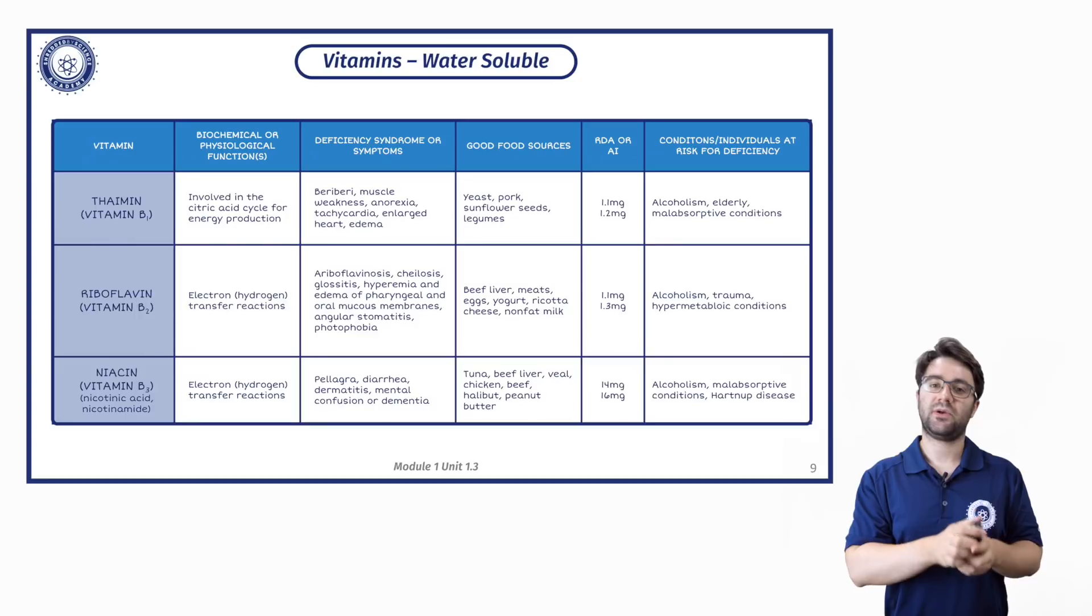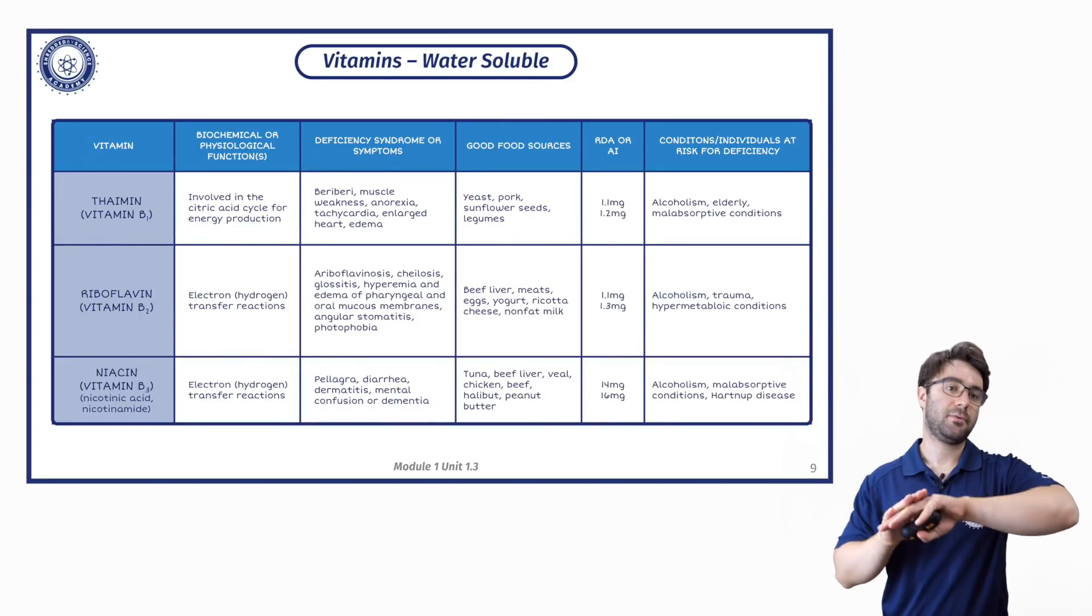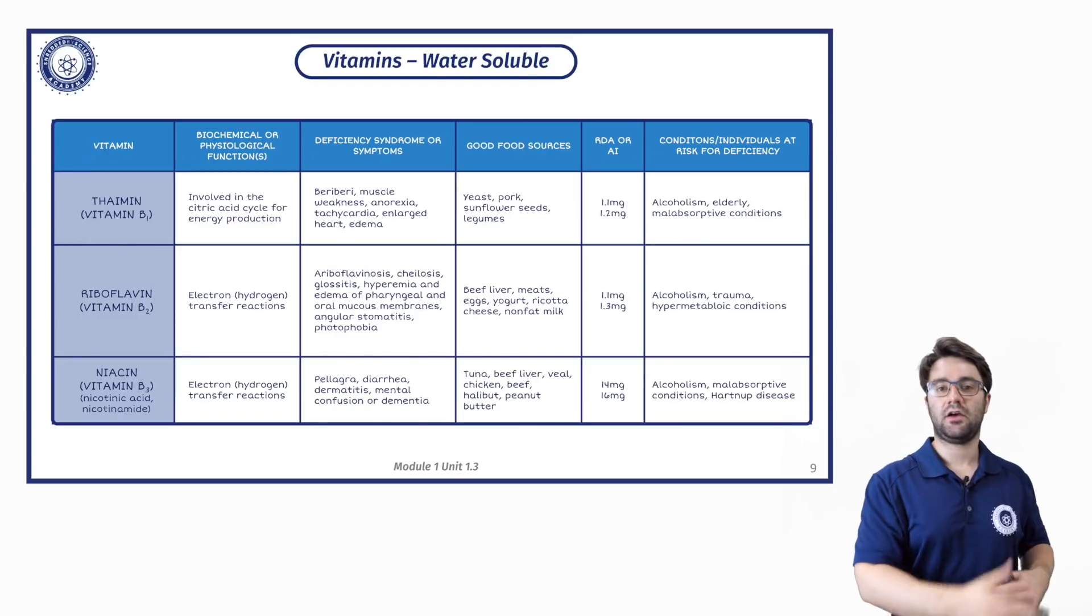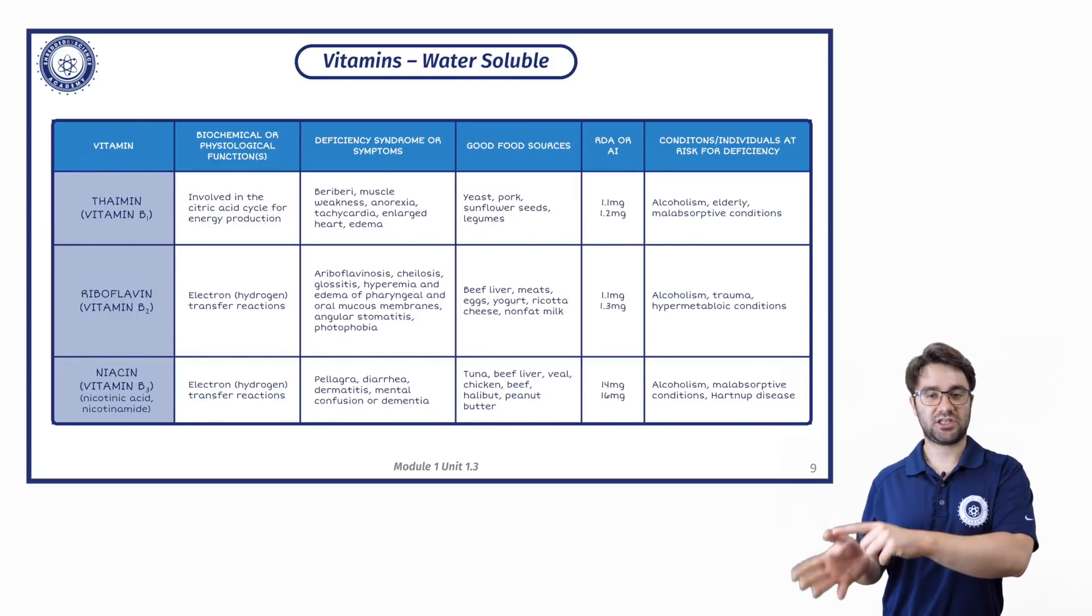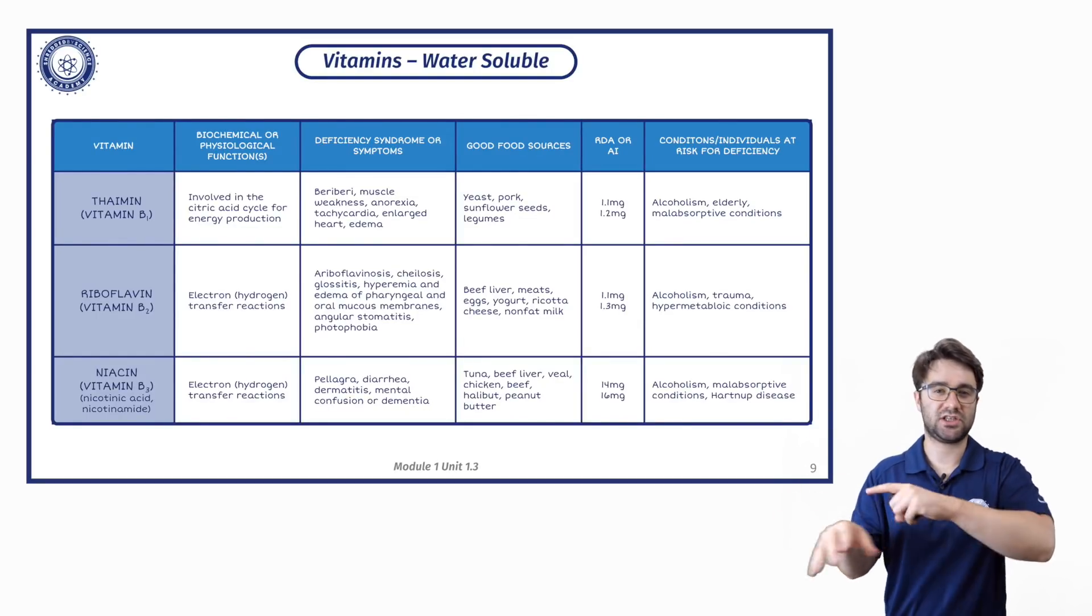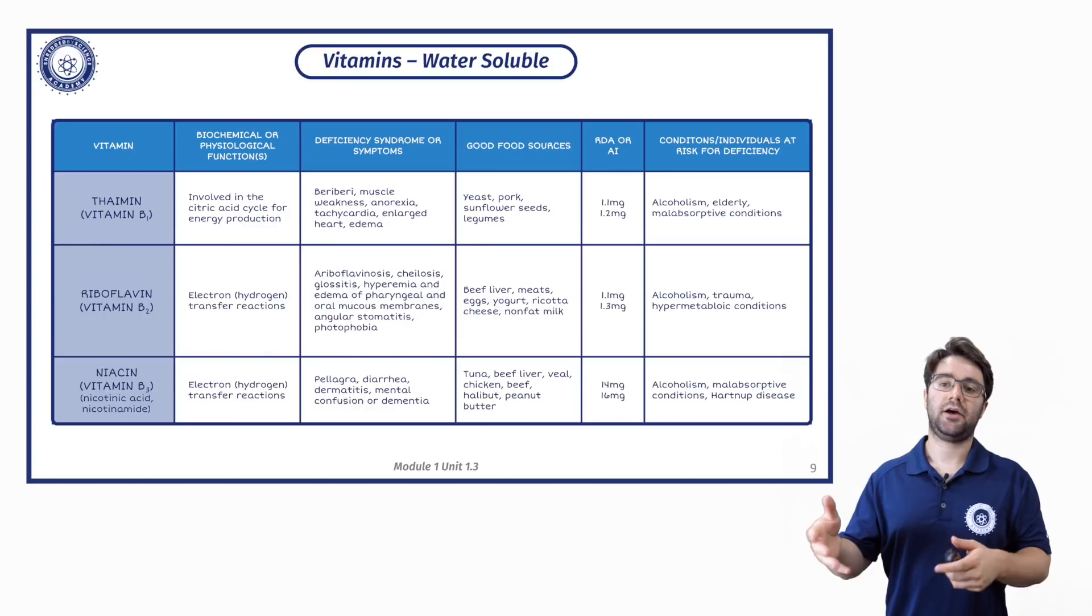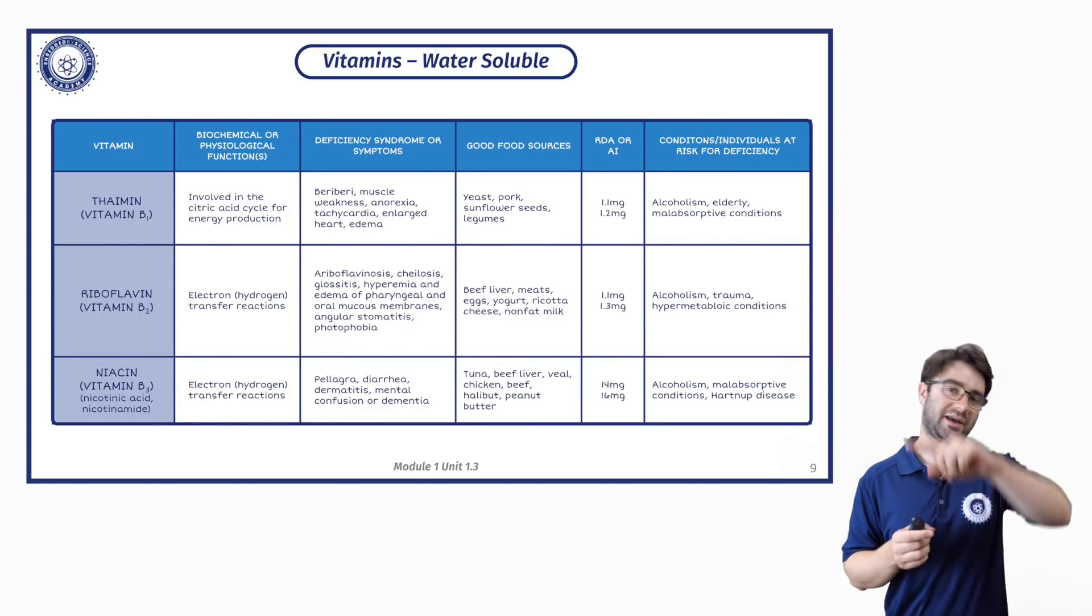Remember the citric acid cycle? We had all of the things coming off the side that then I said will kind of magically resynthesize ATP from that. Electron transfer chain reactions are the reactions that most of those things undergo to then resynthesize ATP.